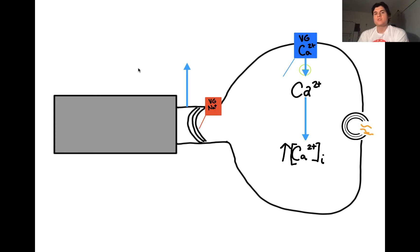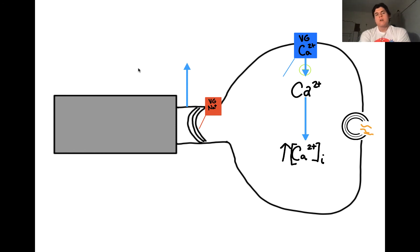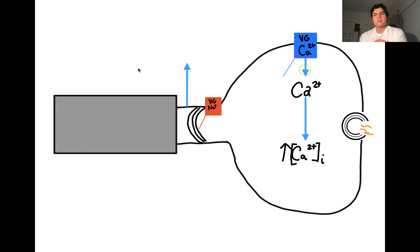Glutamate can bind to three different receptors, but the two main receptors are the AMPA receptor and the NMDA receptor. In my previous video, we talked in great detail about the AMPA receptor and its effects when glutamate bound to it. In order to understand this video, you have to have a good understanding of the AMPA receptor, so if you don't, please go see my previous video. It's only around seven minutes.